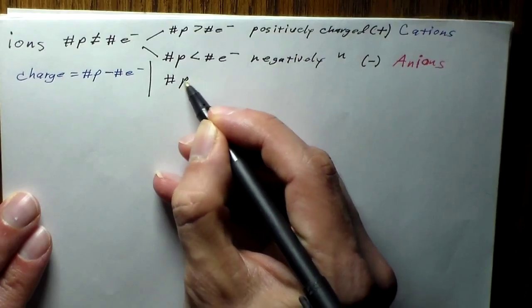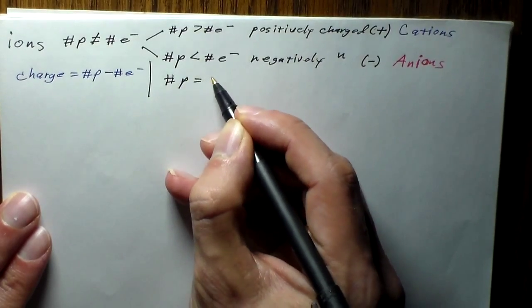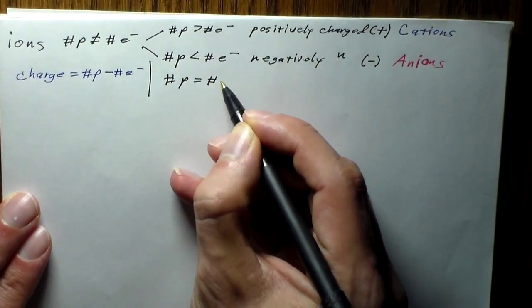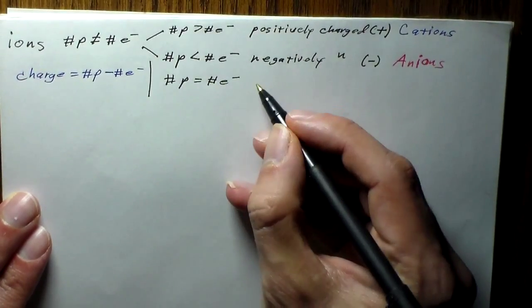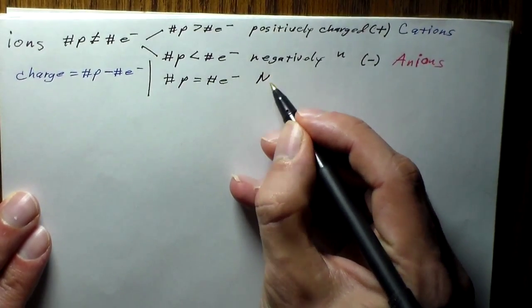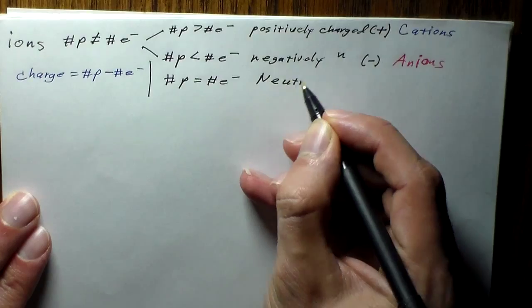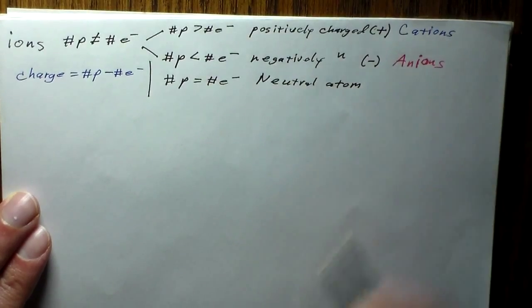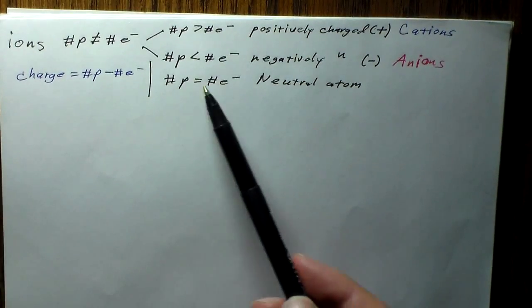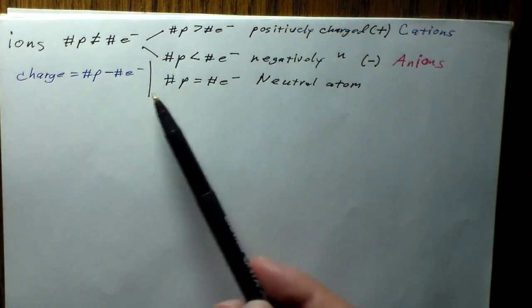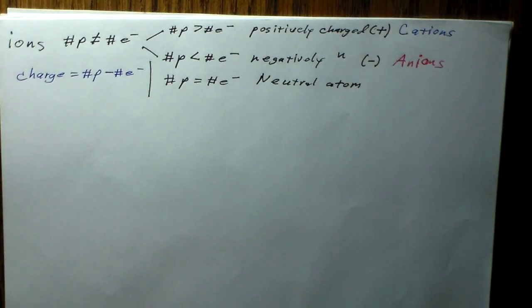For completeness, if the number of protons is equal to the number of electrons, this is just going to be a neutral atom — there's going to be no charge on these.